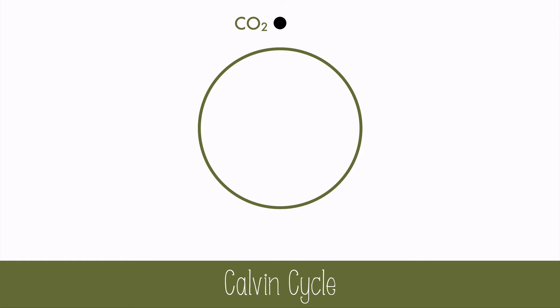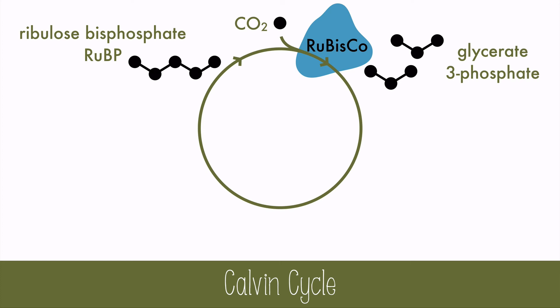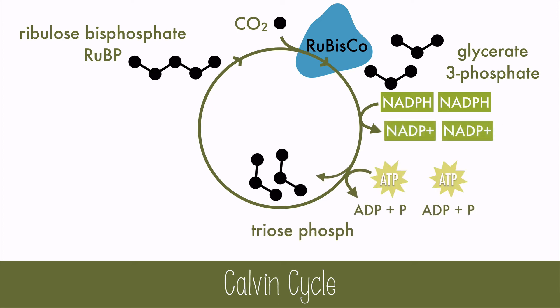The carbon dioxide reacts with ribulose bisphosphate, a 5-carbon compound, and water. The enzyme that catalyzes this carboxylation is called ribulose bisphosphate carboxylase, or rubisco for short. This produces two molecules of glycerate-3-phosphate, which are then reduced by 2 NADPH and 2 ATP to make two molecules of triose-phosphate.